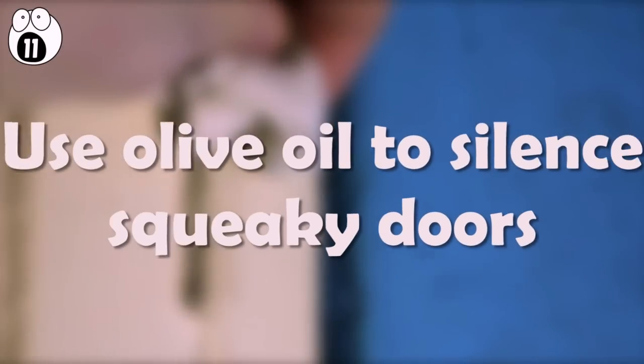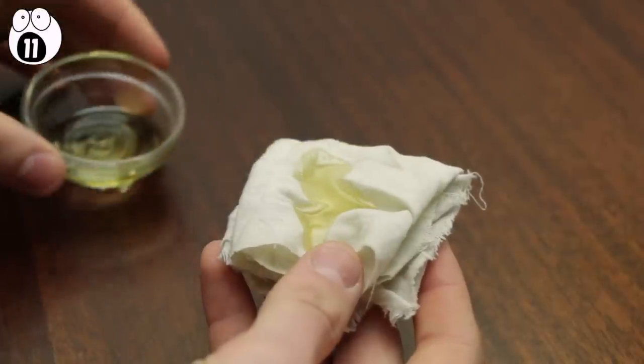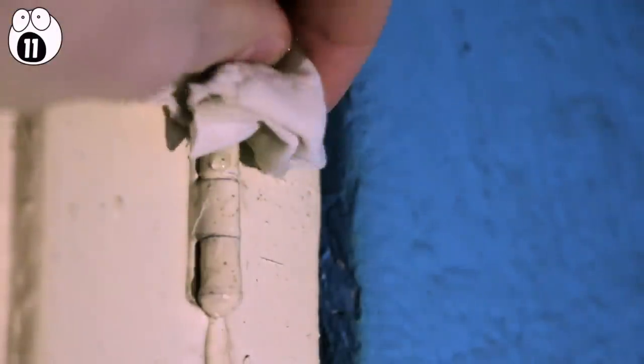Number 11. Use olive oil to silence squeaky doors. This one makes a lot of sense when you think about it. If you're suffering from an annoyingly squeaky door, just lubricate a cloth with a small amount of oil, then wipe the top of the hinges with the cloth so the oil runs down the sides.